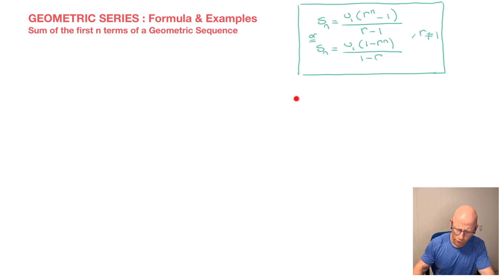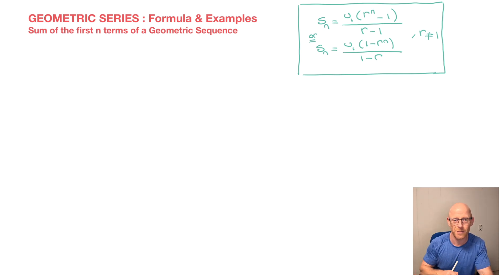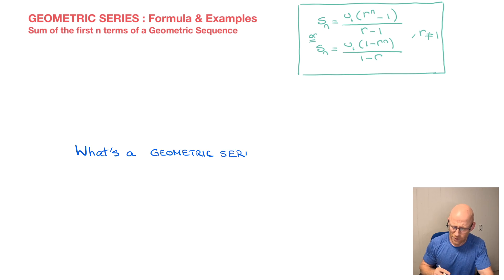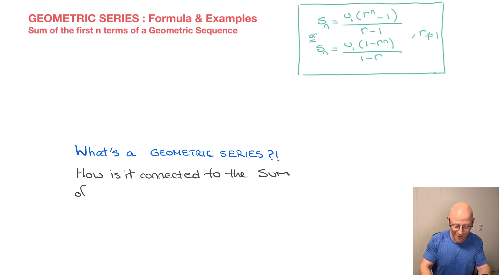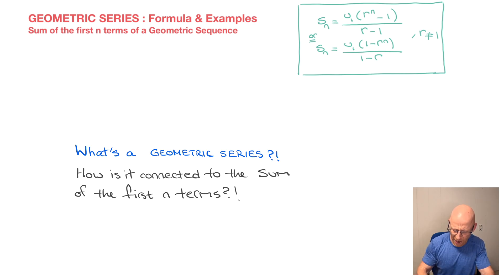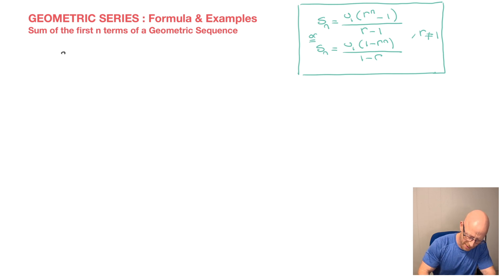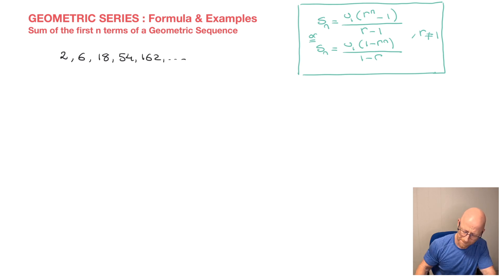Before working through two worked examples, it's quite important to spend a moment to make sure we understand what is meant when we speak of a geometric series and how that's connected to the sum of the first n terms of a geometric sequence. So let me come up with a very generic geometric sequence: 2, 6, 18, 54, 162 — and of course we could carry on forever this way.